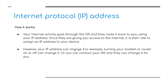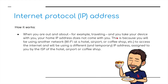Your IP address can change — for example, turning your modem or router off and on can change it, or you can contact your ISP and they can change it for you. When you're out and about — traveling — and you take your device with you, your home IP address doesn't come with you, because you'll be using another network to access the internet. Maybe something from Starbucks, McDonald's, or the airport — you'll be using a different or temporary IP address assigned by the ISP of the coffee shop, hotel, or airport.